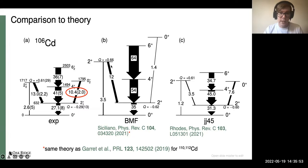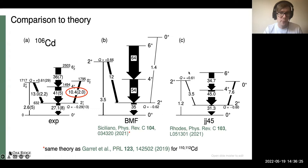Both theory calculations succeed in some places and not in others. Both get the signs of the quadrupole moments for the first and second excited 2+ states correct with magnitudes in the right ballpark. The beyond-mean-field calculation — the same type used in Garrett's 2019 PRL — gets the magnitude of the decay from the second excited 2+ state close to experiment but tends to over-predict energies by roughly a factor of 1.5 to 2, and doesn't describe the excited 0+ state well. The shell model calculation using the JJ45 interaction gets energy levels fairly close and predicts the strength from the excited 0+ state reasonably well, but under-predicts the E2 strength to the second excited 2+ state.